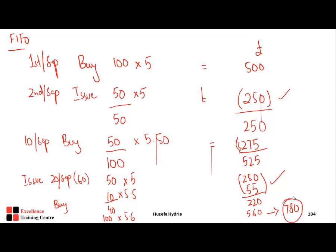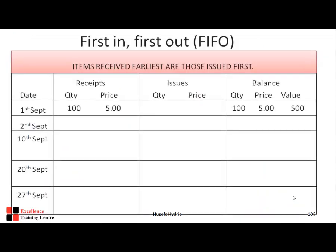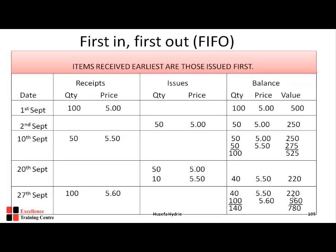In FIFO, whatever inventory comes in first is issued first. We can reconcile our answer: closing inventory is £780, first issue is £250, second issue is £305, and remaining value is £220 — all confirmed correct.